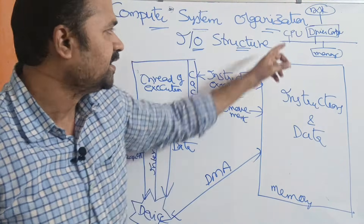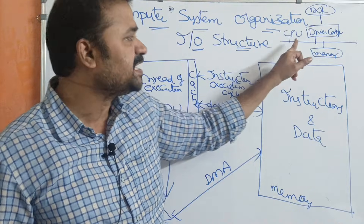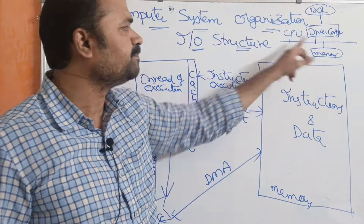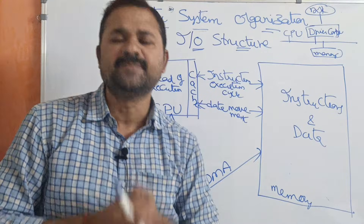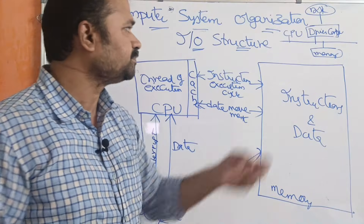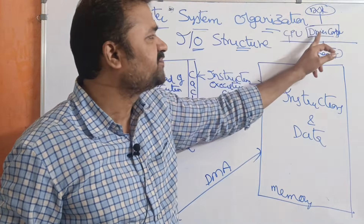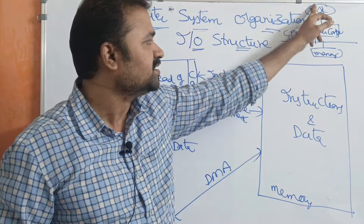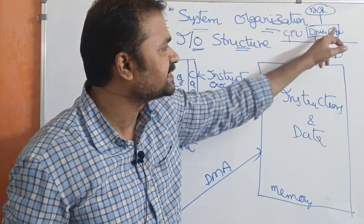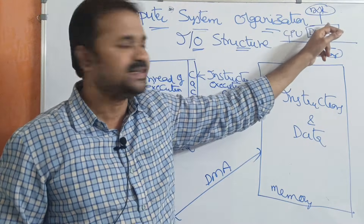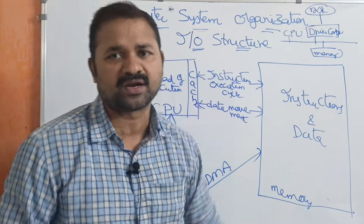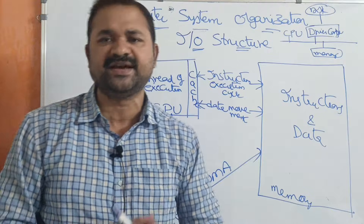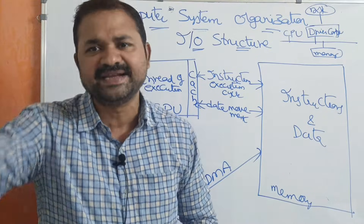Every computer is a combination of CPU, device controllers, and memory, which are connected through the common bus. Every device will have a device controller. For example, hard disk has a disk controller. Likewise, for every input/output device, we have that device controller.